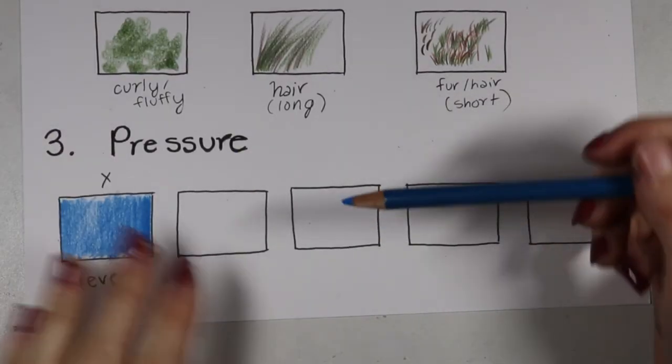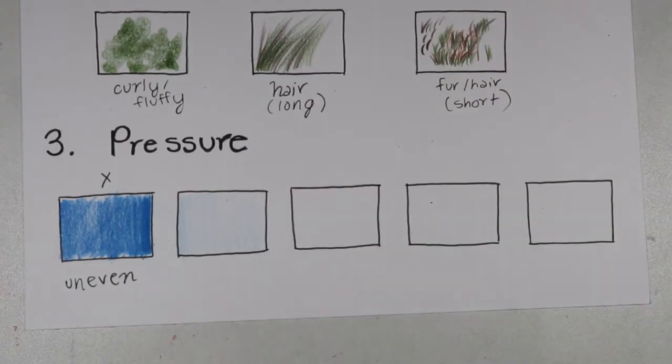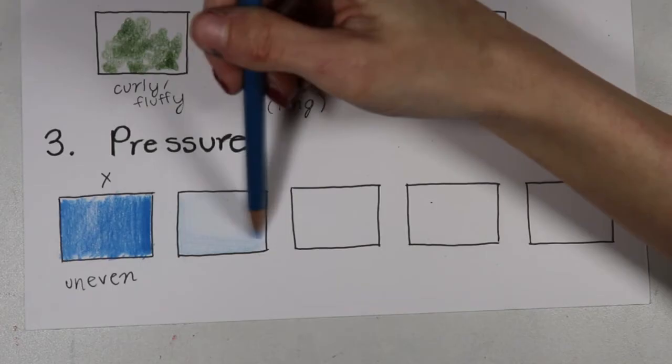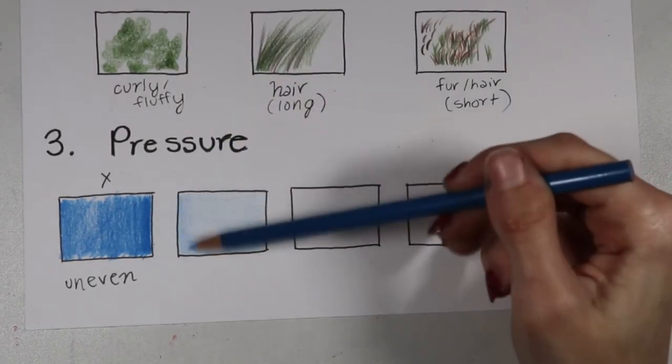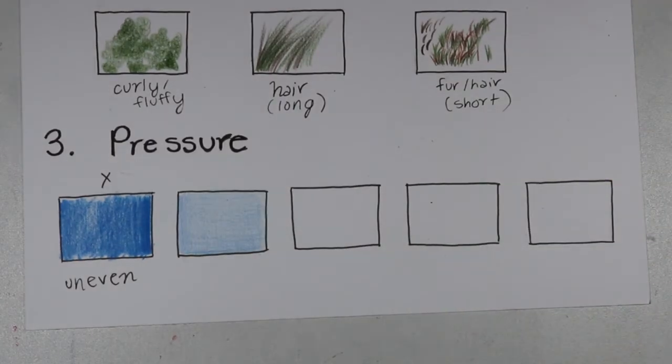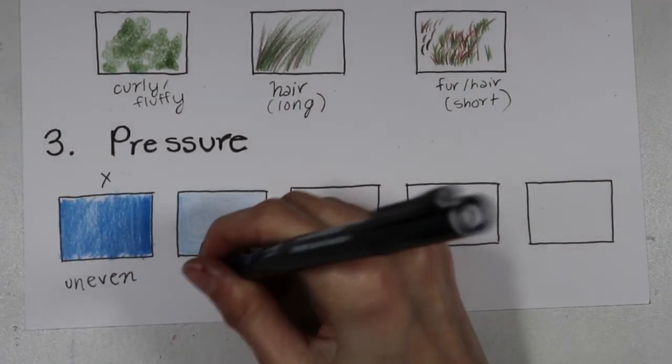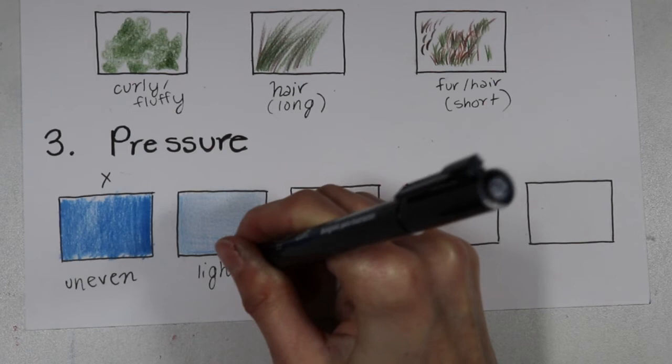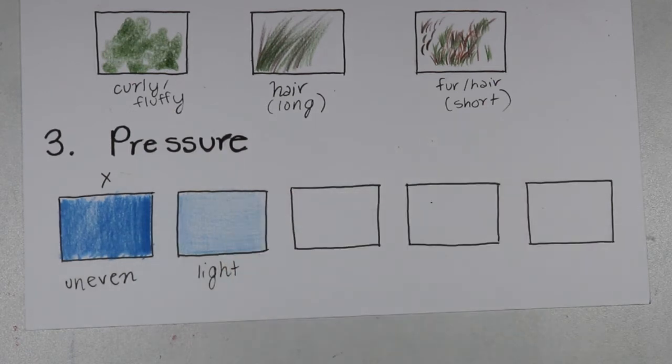Let's go ahead and do a very light pressure. So that would be a very light pressure. As we learned earlier, I went ahead and colored in multiple directions with each layer so that I could get an even coverage.